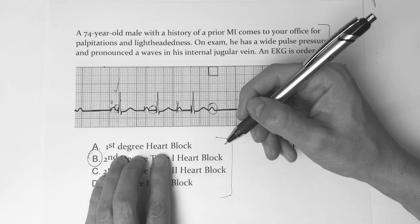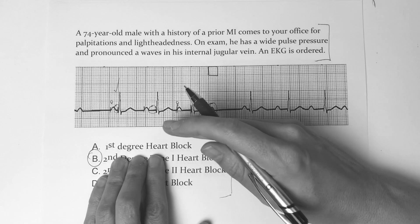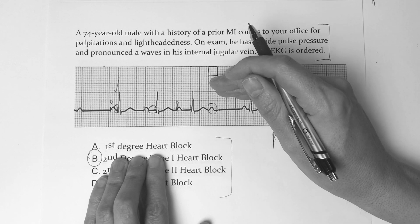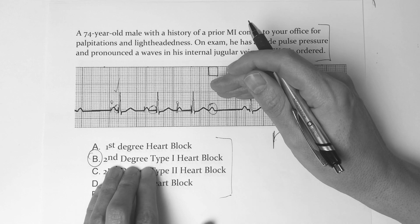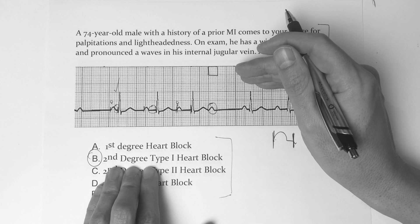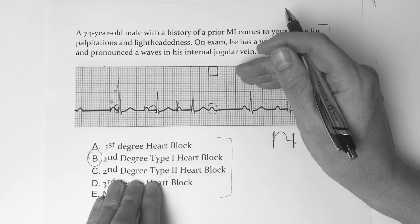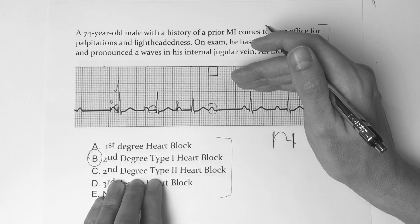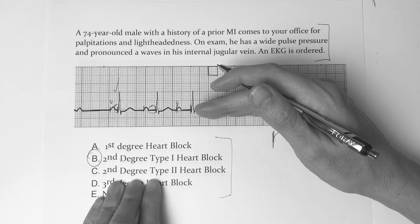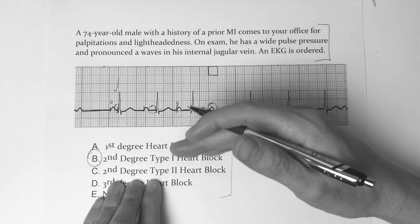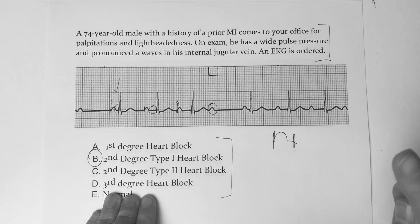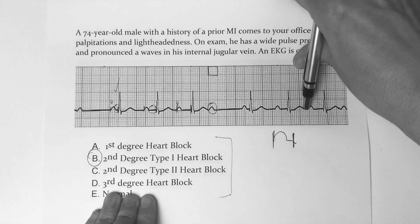A first-degree heart block: prolonged PR, same size throughout, no dropped beat. A second-degree Mobitz type 1: PR interval gets longer, longer, longer, and eventually a dropped beat. Second-degree Mobitz type 2: normal PR, not prolonged, but then somewhere along the way a dropped beat. Third-degree: no association between the P wave and the QRS.